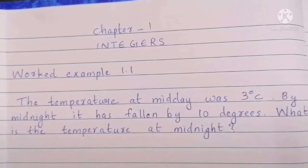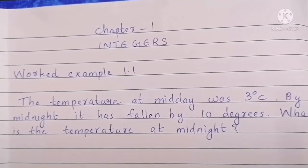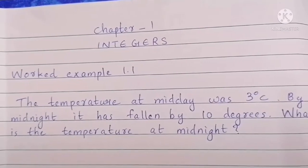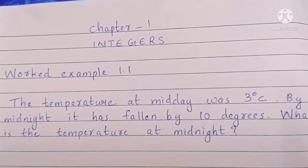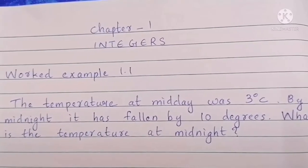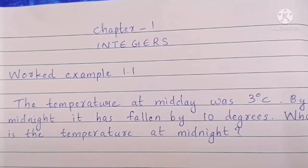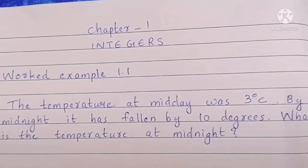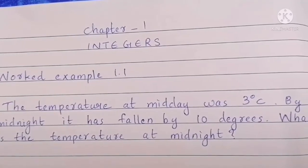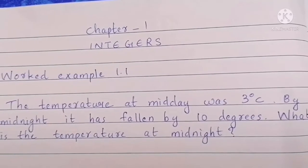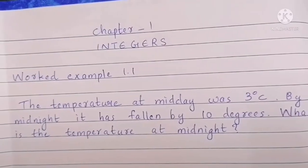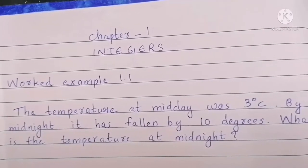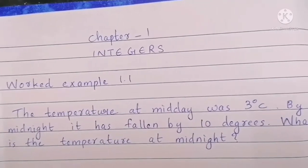Given that at midday the temperature was 3 degrees Celsius, and at midnight the temperature has fallen by 10 degrees — that means there is a decrease in temperature. We can find the temperature at midnight by using a number line.